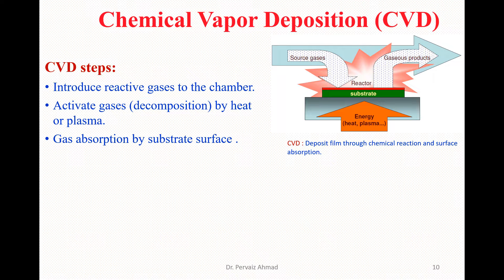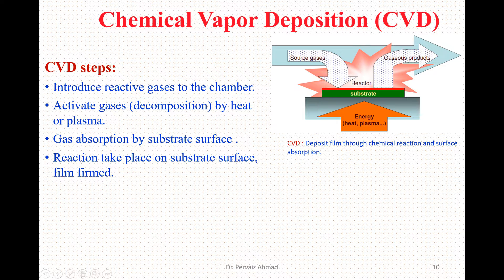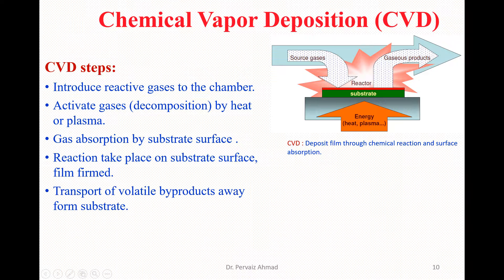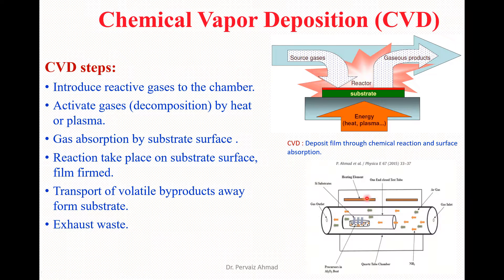Then we have gas adsorption by the substrate surface. As you can see here, the source gases interact with the substrate films, and we have the reaction at that particular area. Next, reactions take place on the substrate surface and we have film formed at that surface. Then we have transport of the volatile byproducts away from the substrate, and at the end we have the exhaust waste.